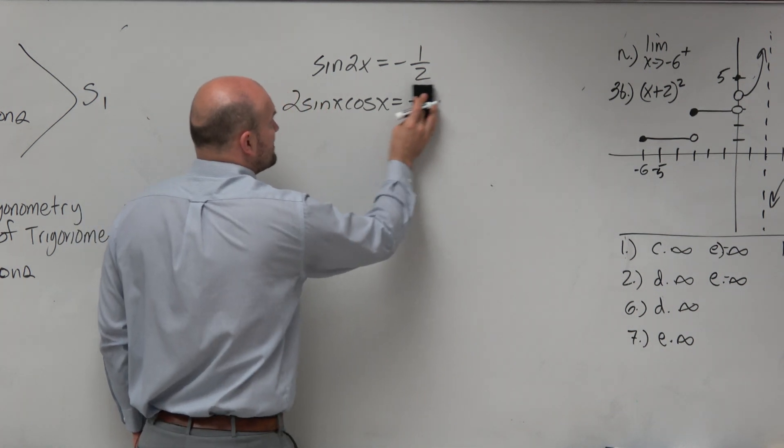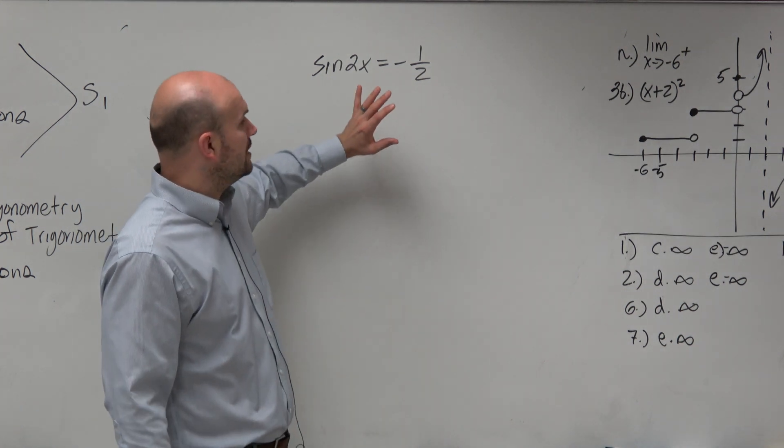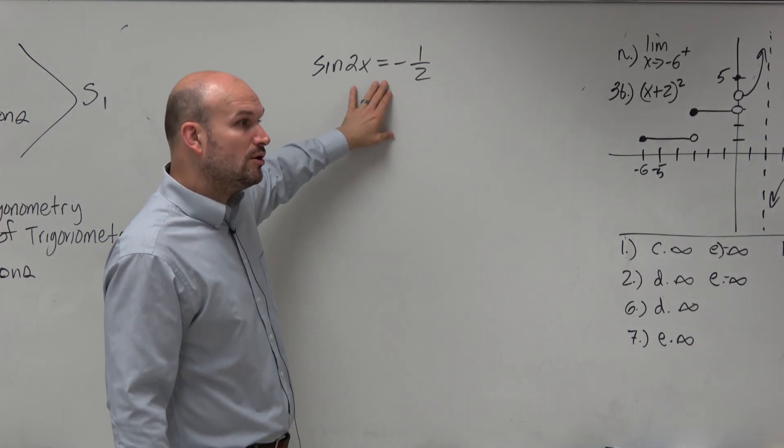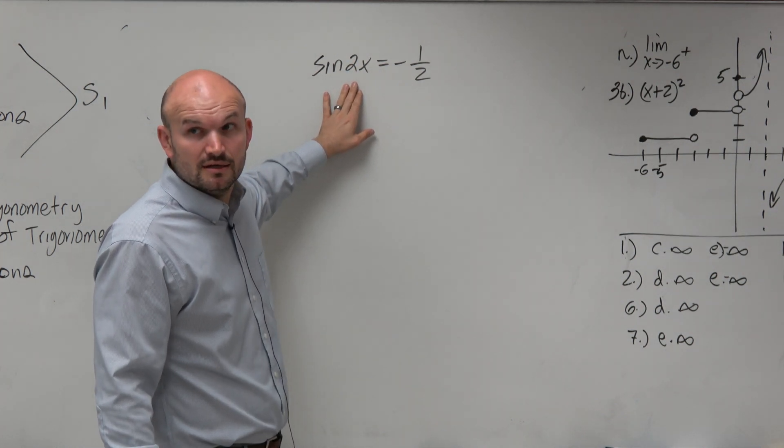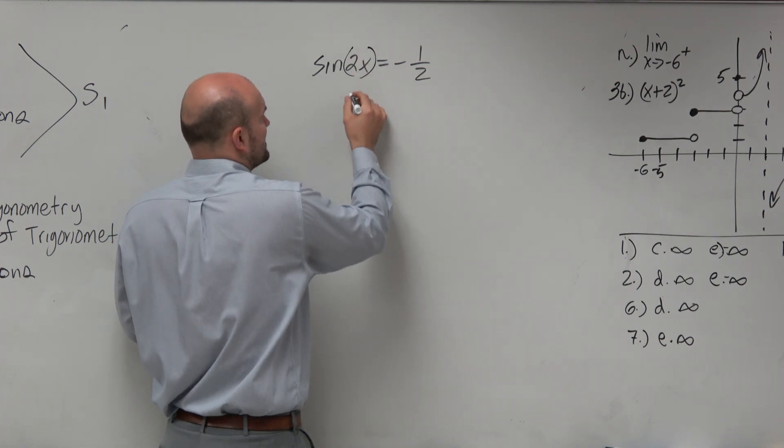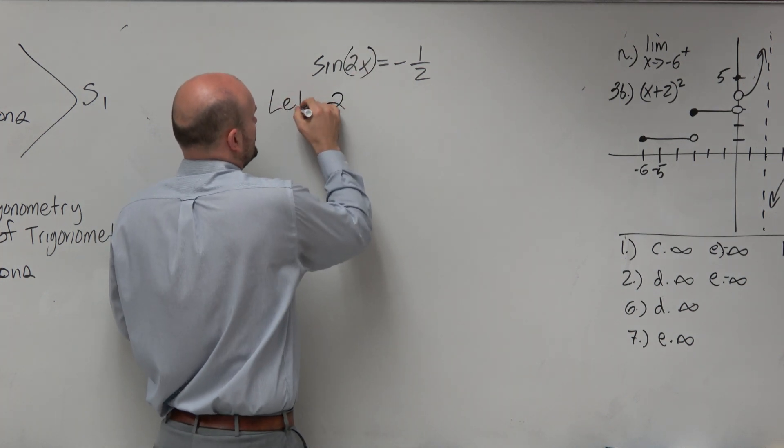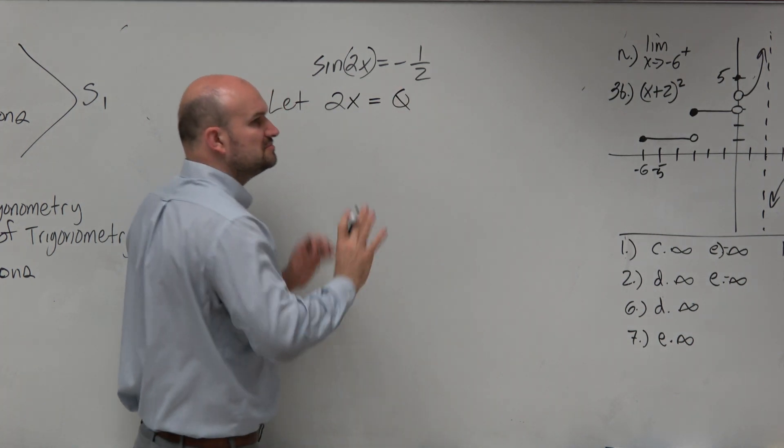And if you remember, when we first learned about solving with double angles or multi angles, we talked about, well, if there's only a term isolated, if we have one term isolated, we can just solve this as is, right? We can just solve this for 2x. And what I did is sometimes I said, let, you can use substitution if you want to. Let 2x equal theta. Let's just do that.